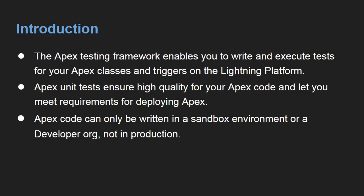We can deploy our Apex code from one org to another. For example, if you are working in a sandbox, you will deploy your code into production. In that case you need to implement Apex test classes so that your Apex code can be deployed properly. Apex code can only be written in a sandbox environment or a developer org, not in production. So you need to write Apex code in sandbox or developer org, and implement its test class as well. Then you can deploy both the Apex code along with its test class from sandbox to production.